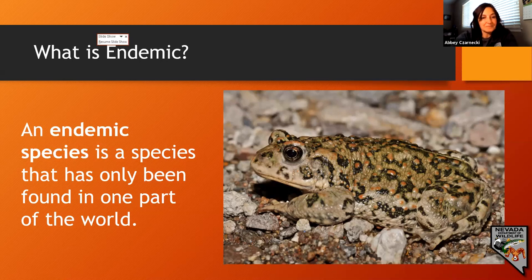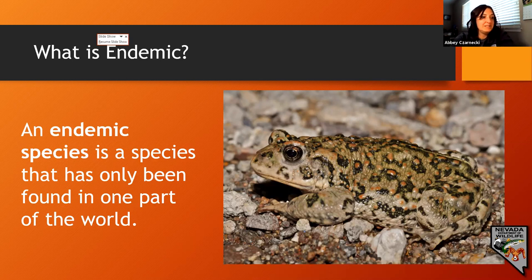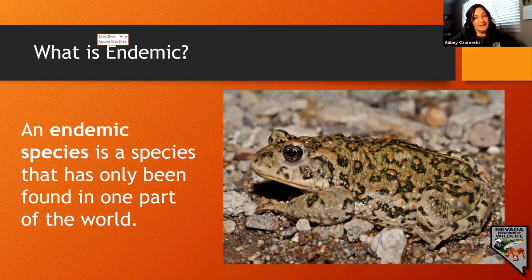An endemic species is a species that has only been found in one part of the world — in this case, southern Nevada. Endemic refers to a species being specifically found in one area. Because they're limited to such a small range, endemic species are usually rare, but their populations aren't always classified as threatened by the IUCN.